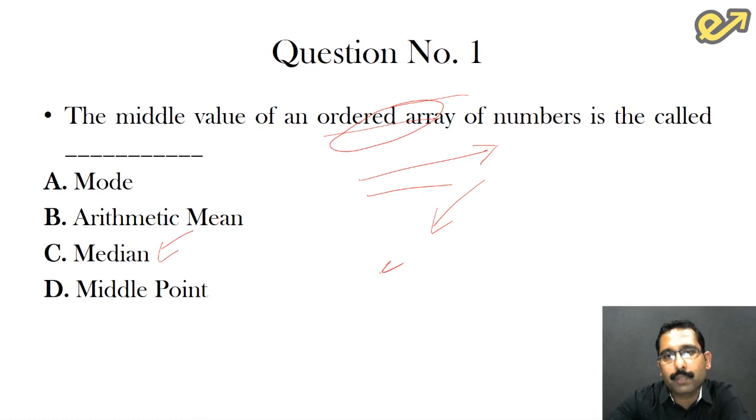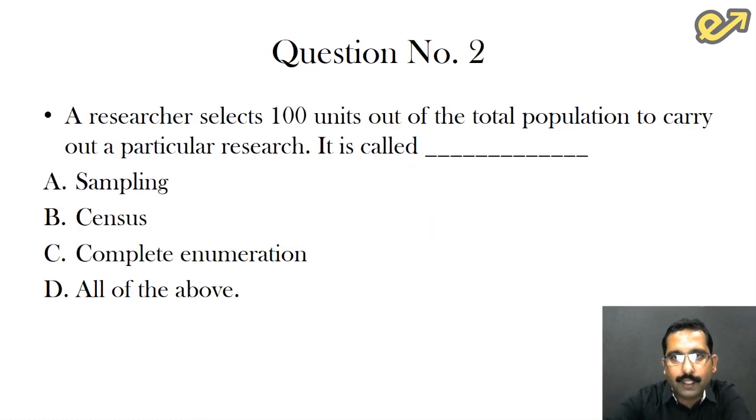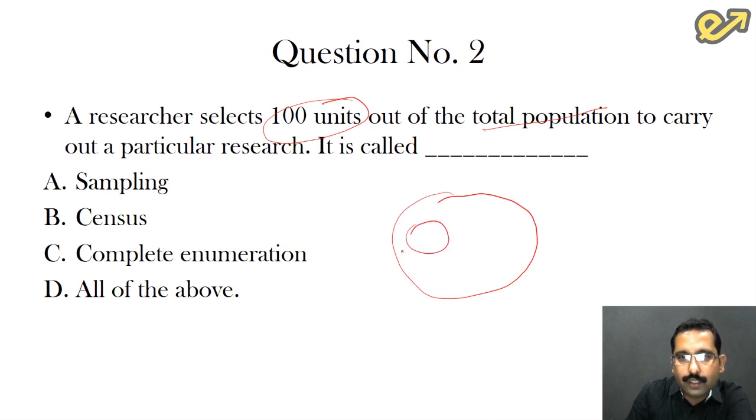Let's move on to the second question. A researcher selects 100 units out of the total population to carry out a particular research. It is called? Let us say this is the population that is available, and out of this he selects 100 units. A small segment which is selected from the population becomes the sample for us. So this process is called sampling.